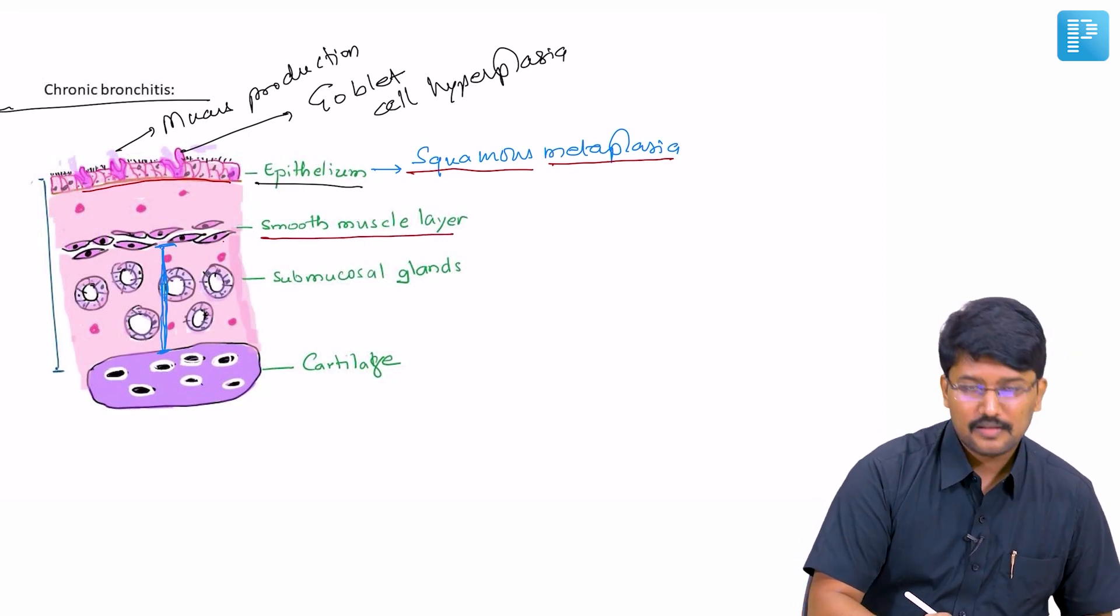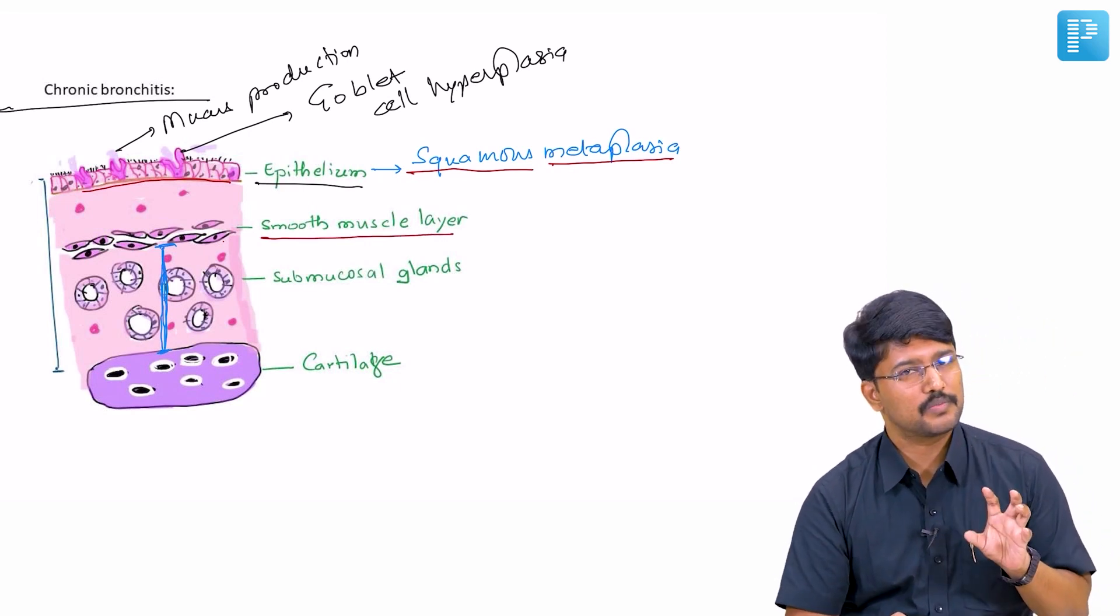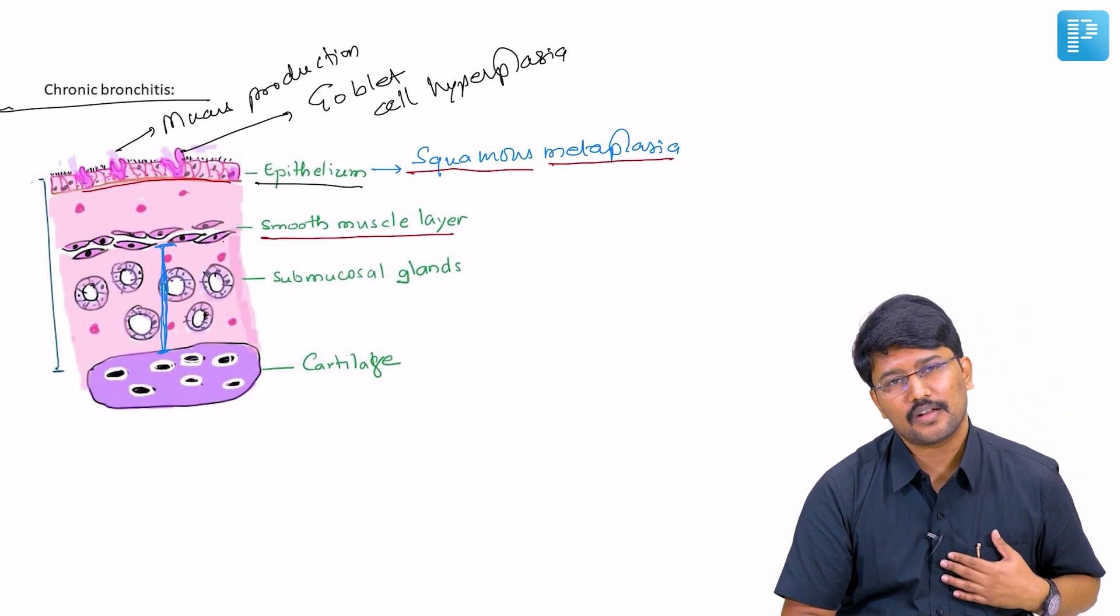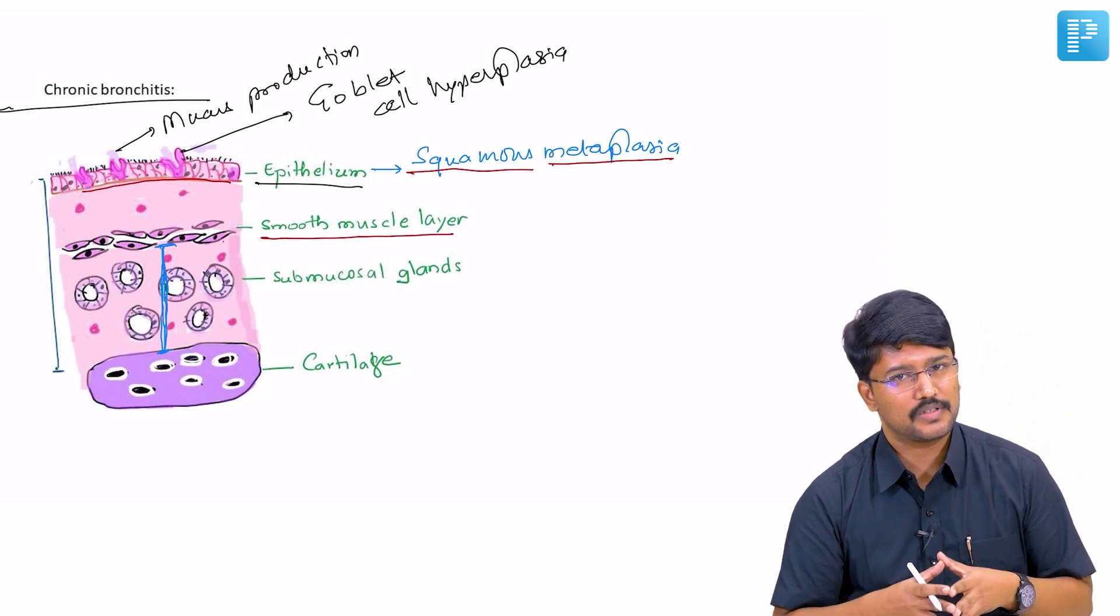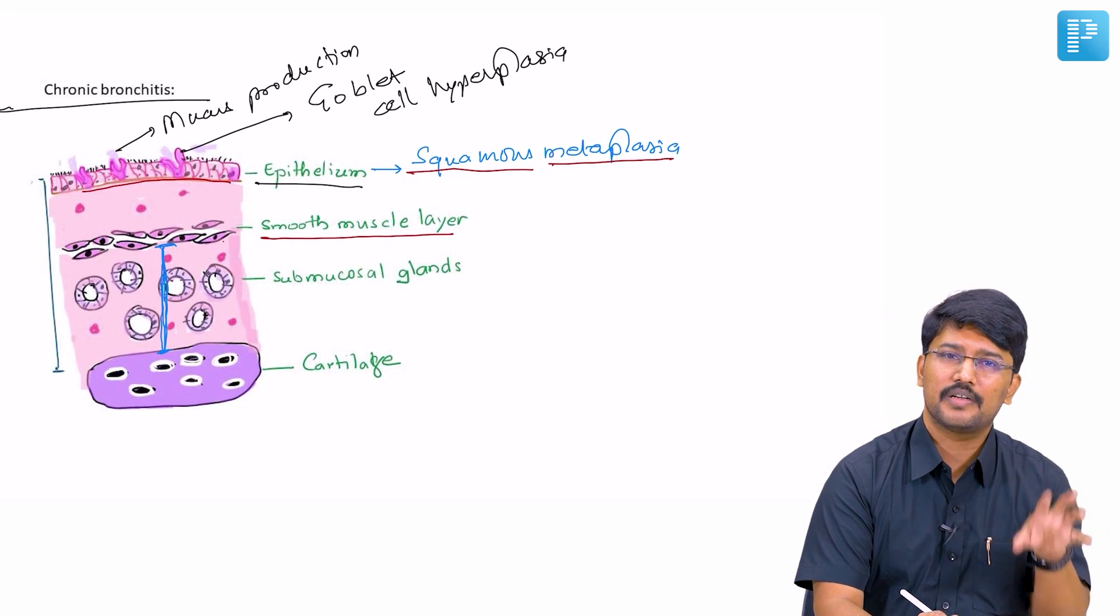Then on the smooth muscle layer, there is some degree of smooth muscle hypertrophy, but it is not as much as we encounter in patients with bronchial asthma. There it is a predominant finding.